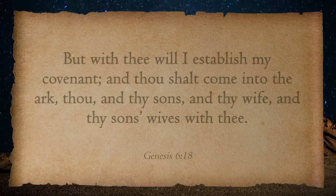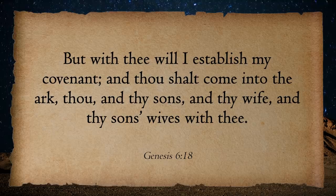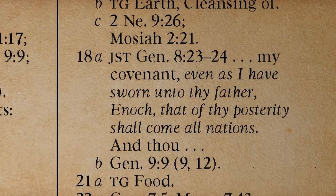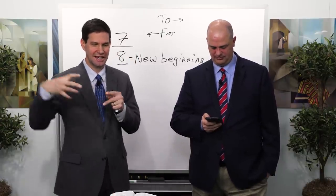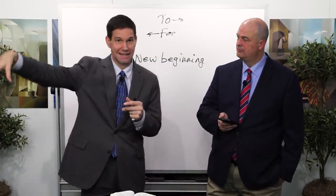Look at verse 18: 'But with thee will I establish my covenant, and thou shalt come into the ark, thou and thy sons, and thy wife, and thy sons' wives with thee.' There's the eight that are mentioned. Look at the Joseph Smith translation in footnote 18a: 'But with thee will I establish my covenant, even as I have sworn unto thy father Enoch, that of thy posterity shall come all nations. And thou shalt come into the ark.' It's this beautiful carrying on of a promise that God gave to Enoch — and we know God gave that promise to Adam and Eve before — it keeps getting passed down, renewed, experiencing a new beginning with each dispensation.